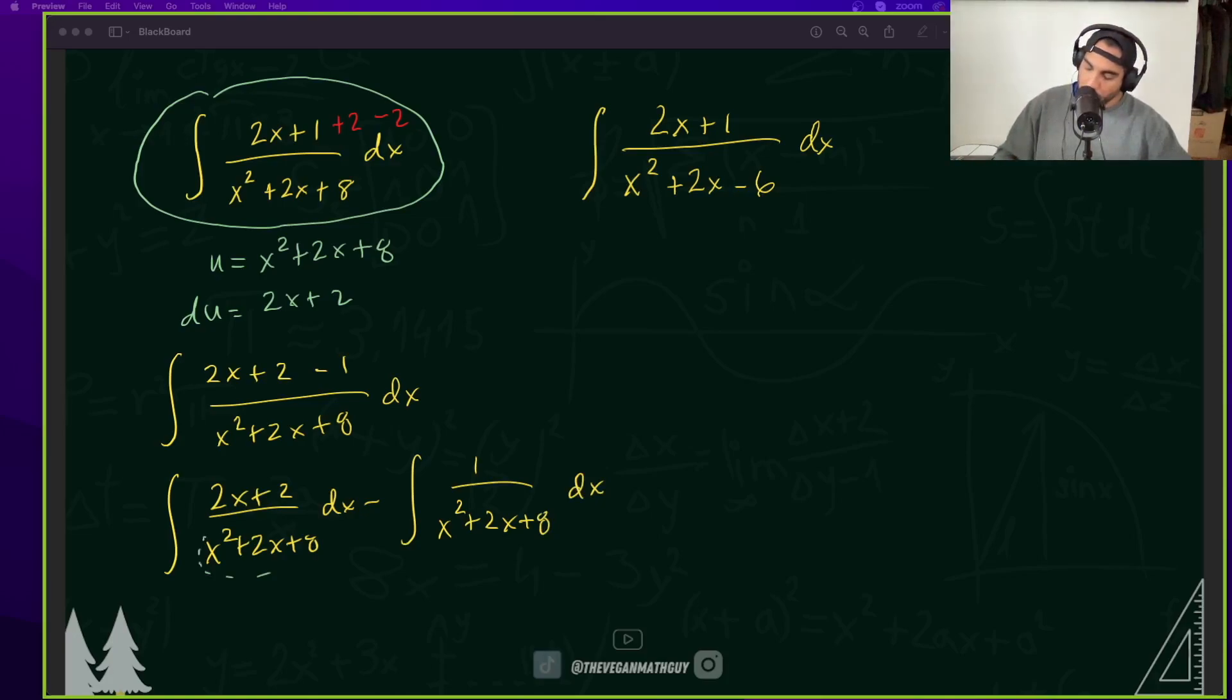And that first one is where we use u substitution. So our u is going to be the u that we had chosen in the very beginning. And you'll see that the 2x plus 2s cancel out.